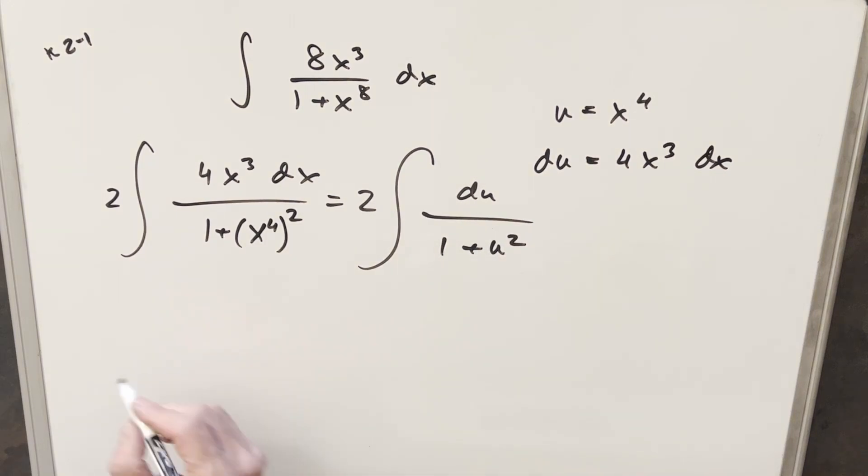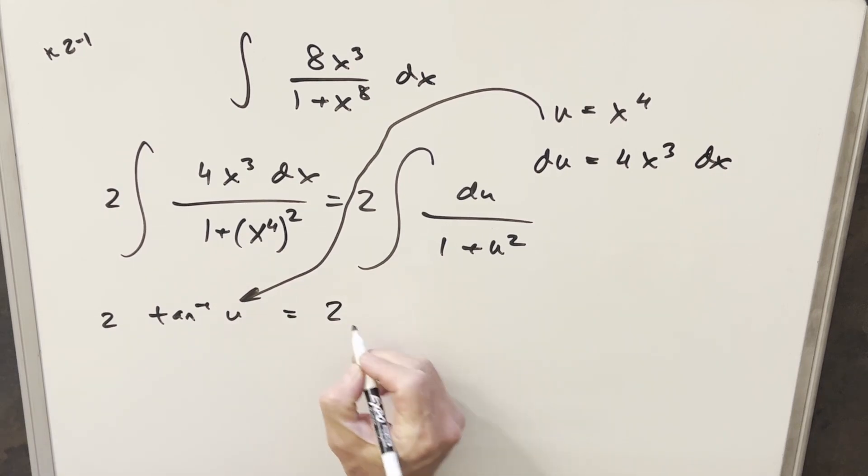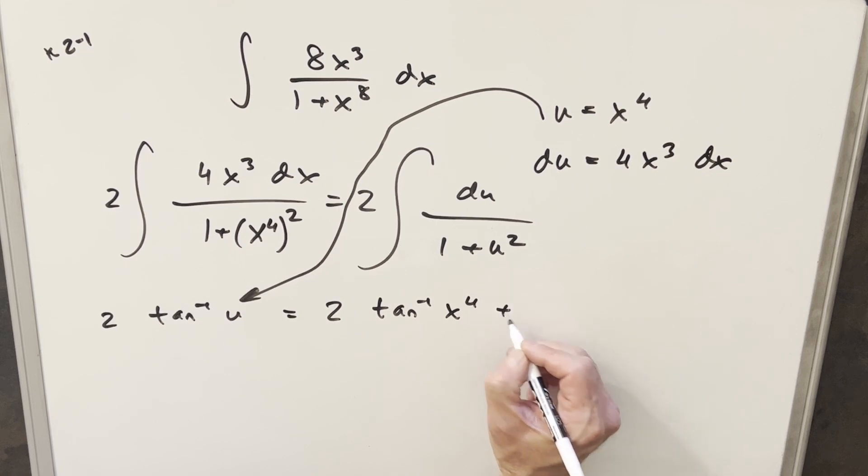But now this integral here is just going to be arctan. So I'm going to have 2 inverse tan or arctan of u. And I'm just going to back substitute to finish this thing off. So for my final solution, I'm just going to have 2 arctan x to the 4th plus c.